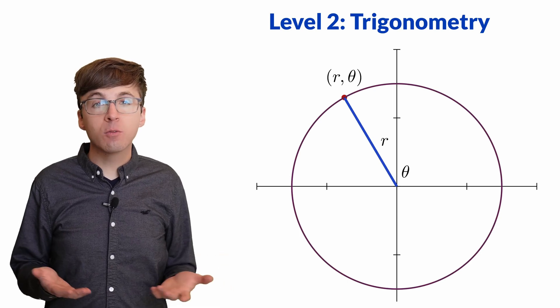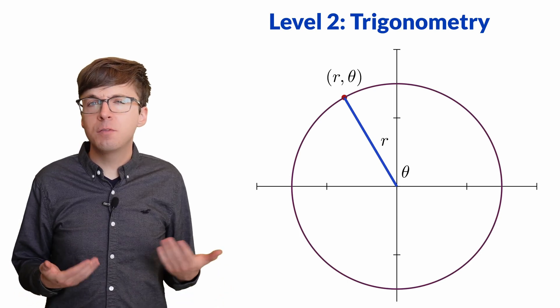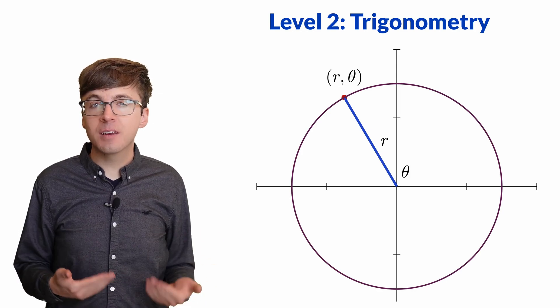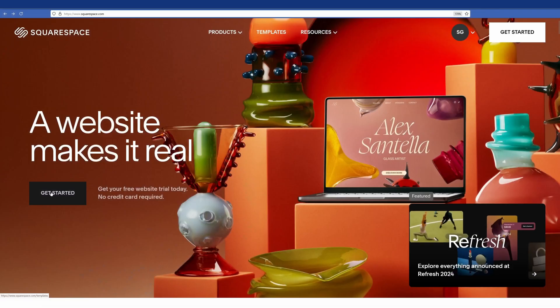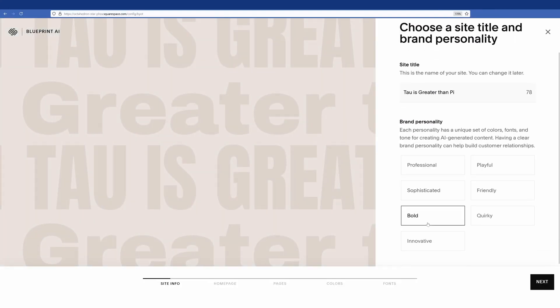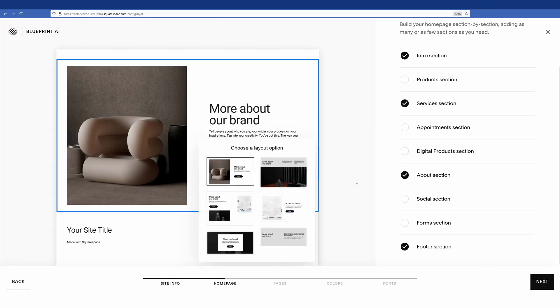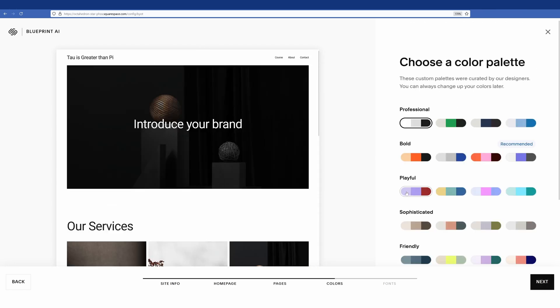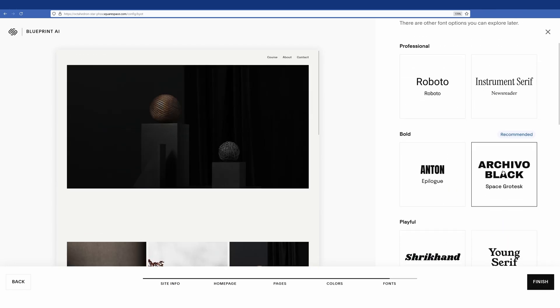Just like building trig functions relies on the unit circle, building a website requires the right tools. As a former software developer at a large e-commerce company, I know firsthand just how complex it can be. But with Squarespace, all that complexity is taken care of for you. Squarespace's new design intelligence combines decades of design experience with powerful new AI tools, so anyone can build a beautiful custom website, no technical skills required.